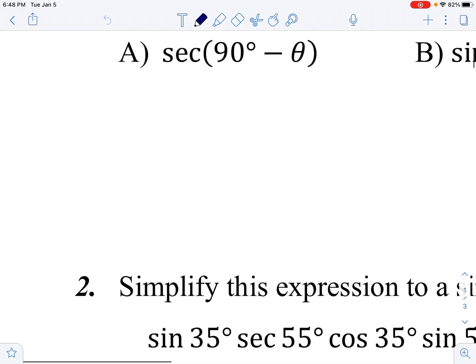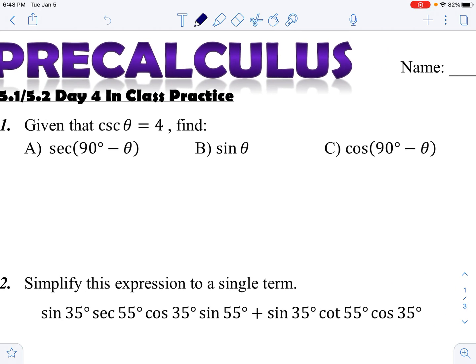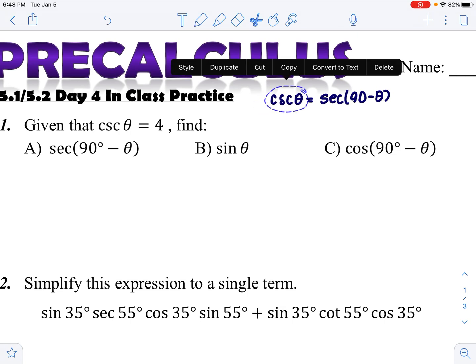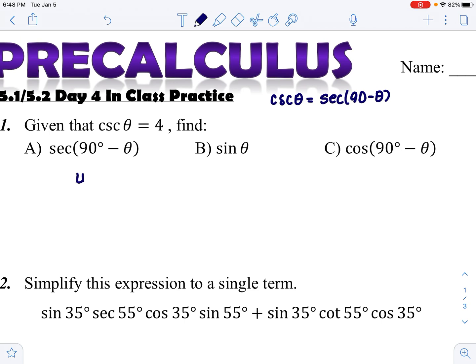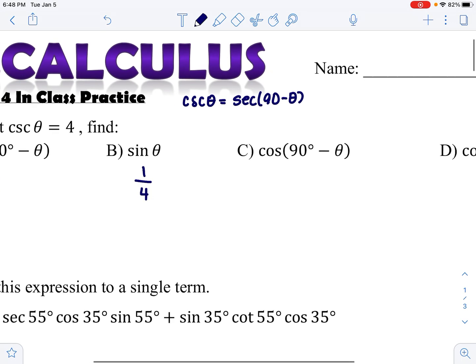The first thing is secant of (90 minus θ), which is the secant of the complement. What you need to know is the co-function identity: secant of (90 minus θ) is equivalent to cosecant of θ. So the answer is just 4. Then sine is the reciprocal of cosecant, so sine θ = 1/4.